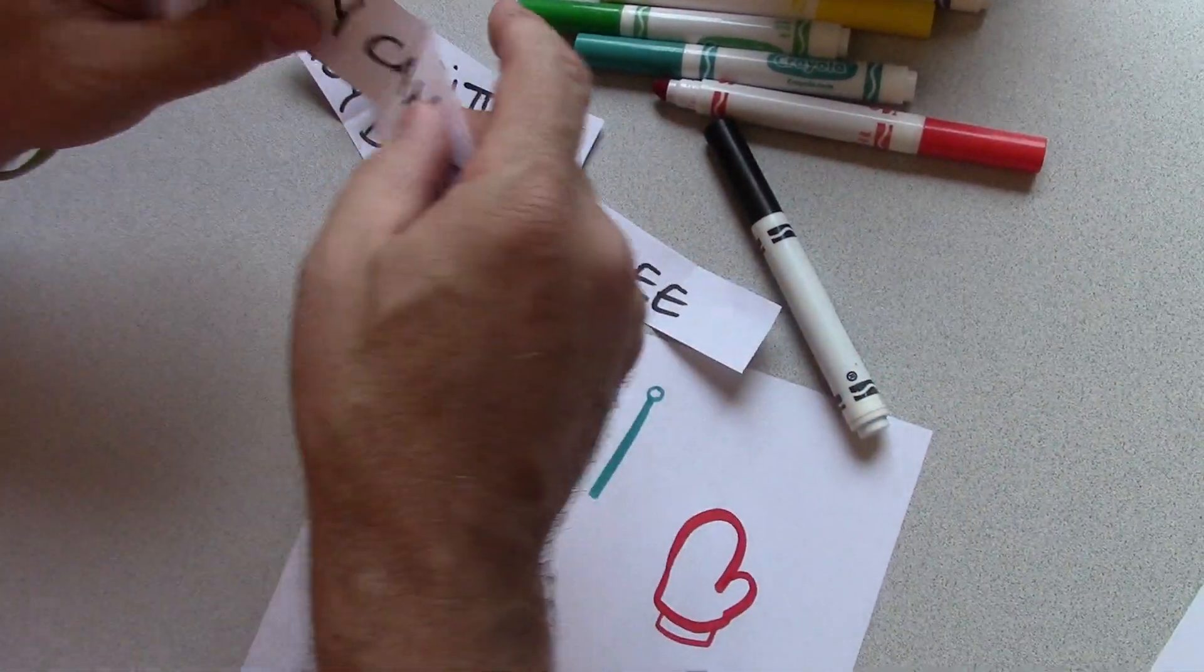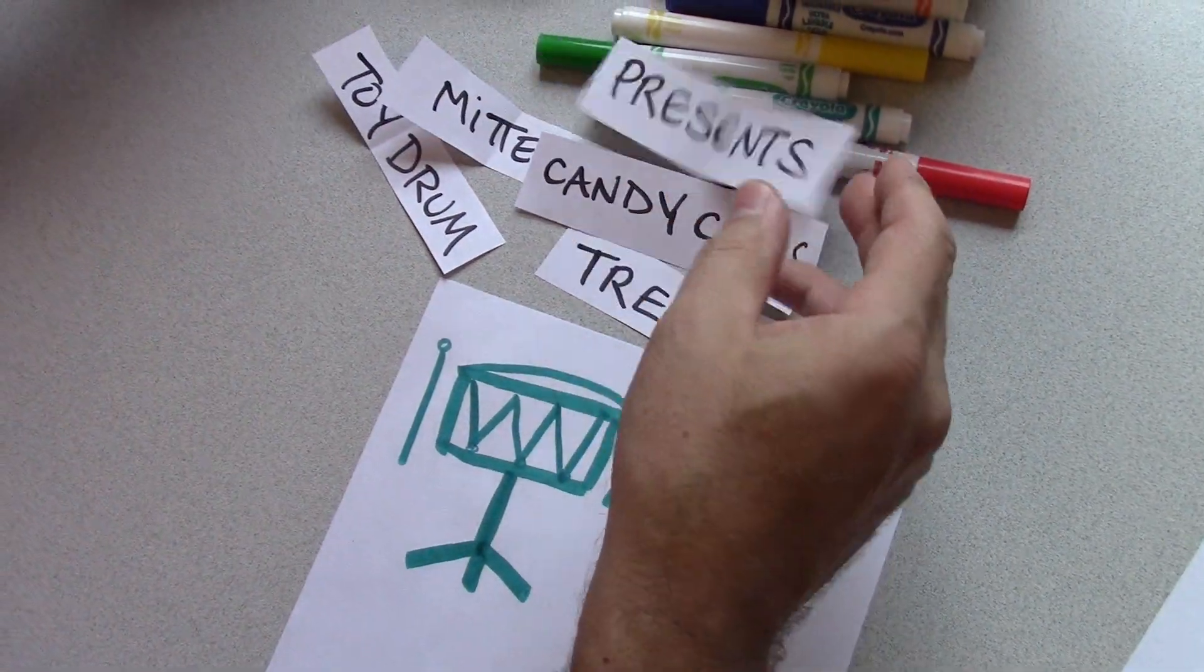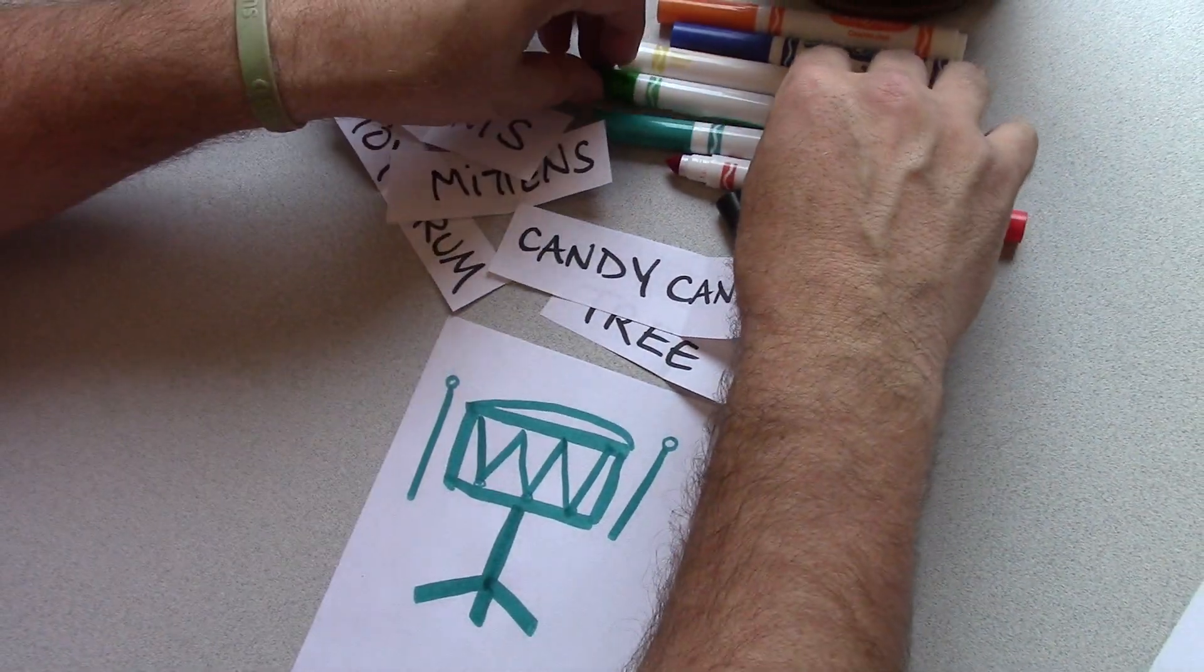Here's a tree. I'm going to pull out a few of these just to show you. Candy canes, of course, you could do a letter J with that. Presents. Let's do presents.